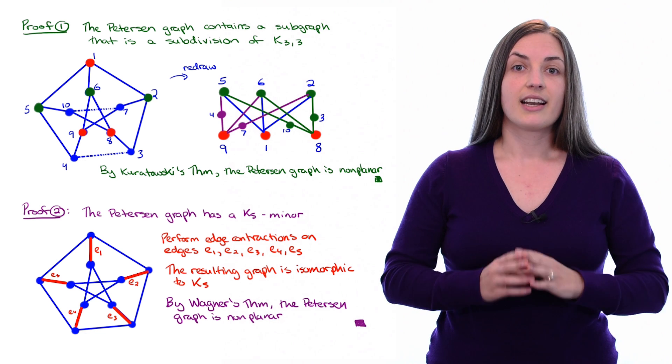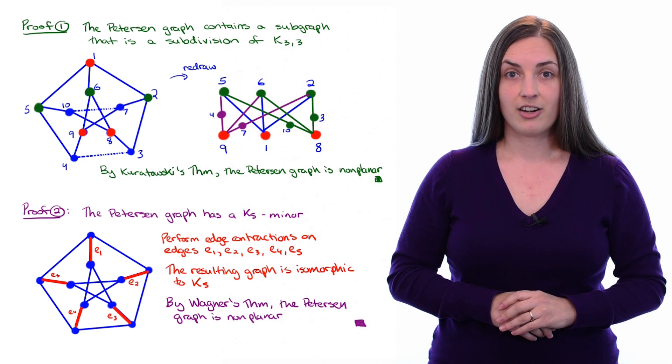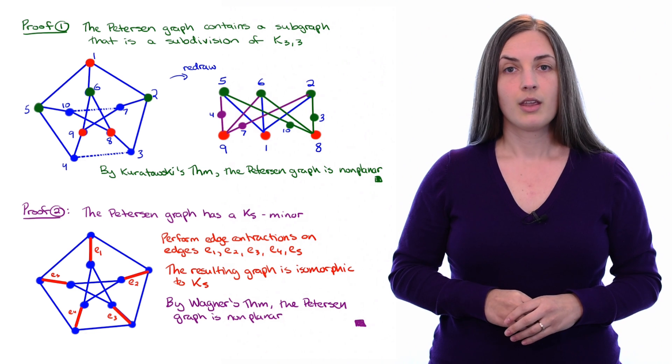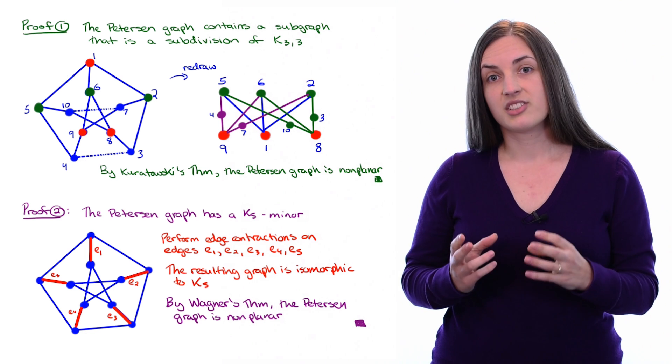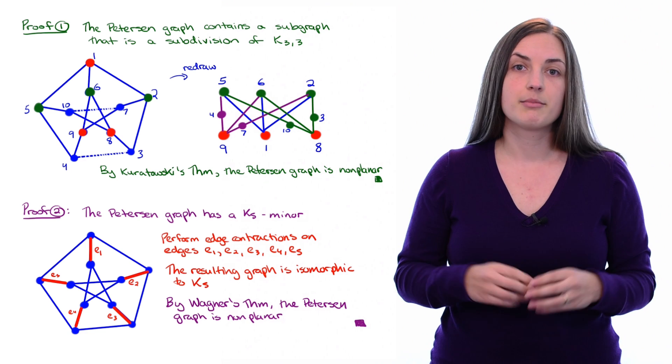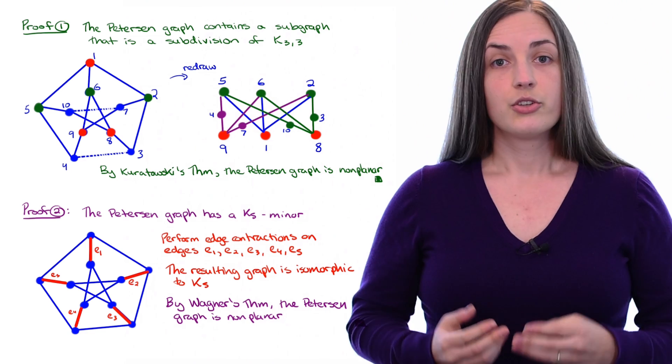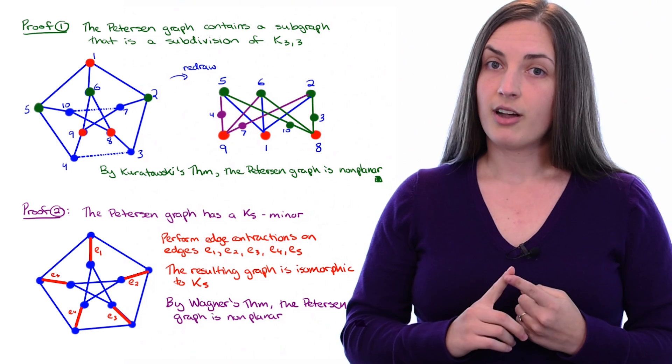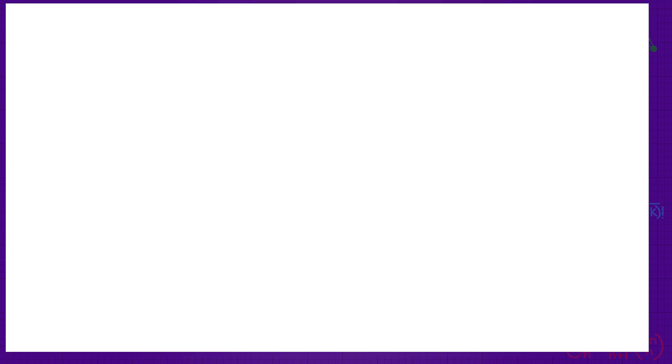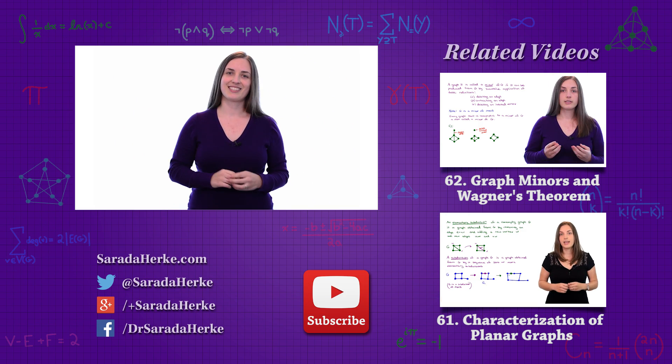So you can see that clearly the Peterson graph is non-planar, and you can use two different methods to prove it. Another key thing to notice is that sometimes Wagner's theorem is easier to use, sometimes Kuratowski's theorem might be more apparent. So whenever you're looking at a particular example, remember that you have both Wagner's theorem and Kuratowski's theorem at your disposal. I hope you enjoyed this video and I'll see you next time.